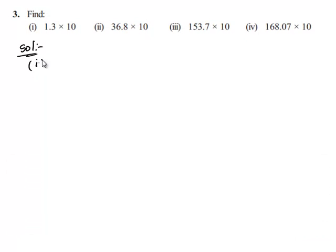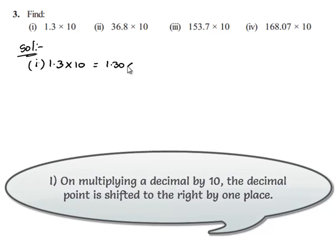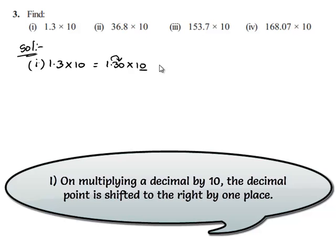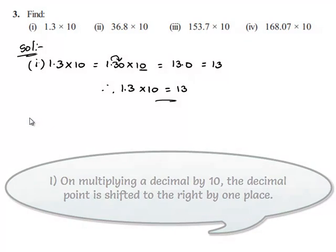First, take down the first one: 1.3 multiplied by 10. This can also be written as 1.30 multiplied by 10. Here we can observe that 1 is followed by one zero in 10. Therefore the decimal point moves one digit to the right. This gives 13.0, which can also be written as 13. Therefore 1.3 multiplied by 10 is equal to 13.